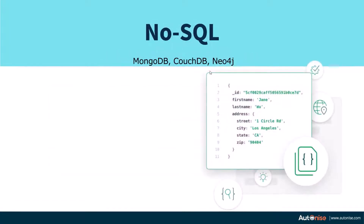NoSQL databases include MongoDB, CouchDB, 4DB, Neo4j, and so on. In these, data is stored in JSON format with key-value pairs in each document. Each document can have different key-value pairs — there is no constraint that every document must have the same key-value pairs inside the database.